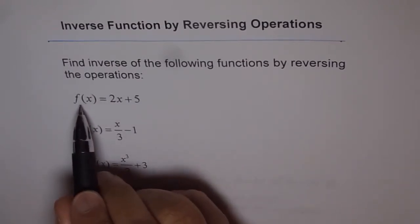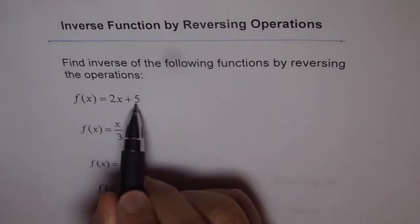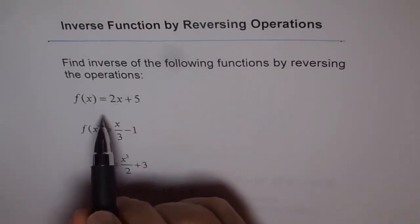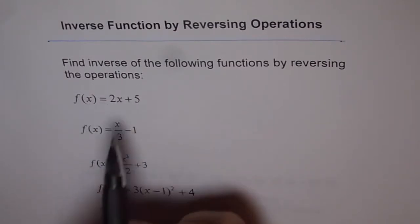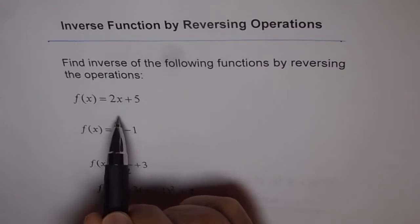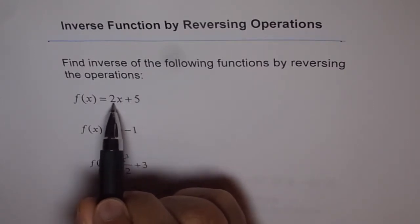Now function f of x is given as 2x plus 5. It's a linear function. What are we doing here? We are multiplying the input by 2 and then adding 5. And the reverse will be what? Take away 5 and divide by 2.